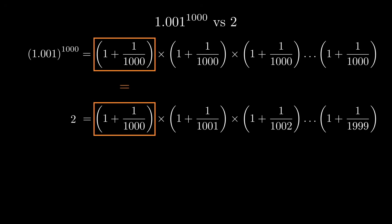Look at the first entry in each product. They're equal. 1 plus 1 over 1,000. Look at the second entries. 1 plus 1 over 1,000 versus 1 plus 1 over 1,001. And that's slightly larger in the first equation.